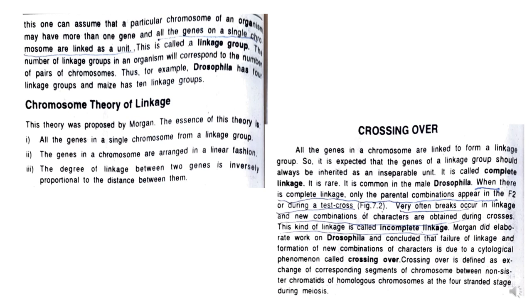The chromosome theory of linkage was proposed by Morgan. The essence of this theory is that all the genes in a chromosome form one linkage group, the genes are arranged in a linear fashion, and the degree of linkage between two genes is inversely proportional to the distance between them — less distance means more linkage, and more distance means lesser probability of linkage.